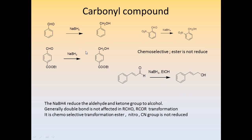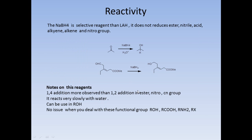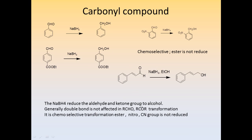Now see the application of sodium borohydride. Simply, benzaldehyde gives an alcohol. The nitro group is not reduced and the ester is not reduced. Sodium borohydride in ethanol — 1,2-addition is very fast for aldehydes and ketones; the double bond is generally not affected. Aldehyde and ketone transformation: the aldehyde reacts via 1,2-addition. But sometimes ketones or esters also give 1,4-addition. So it is a very chemoselective transformation — no ester, no nitro, double bond not affected.